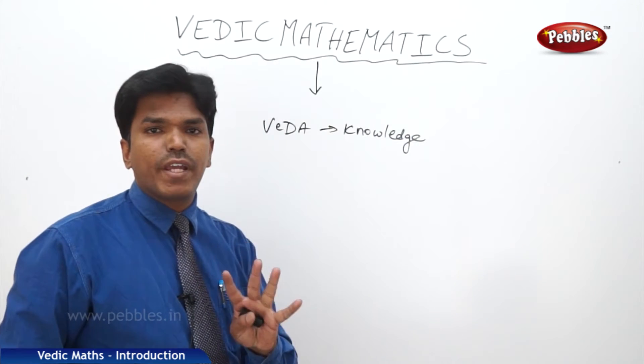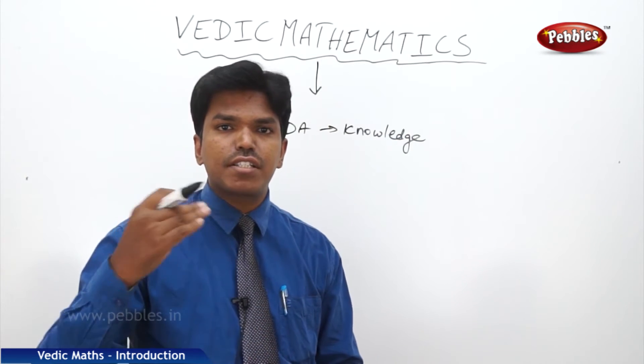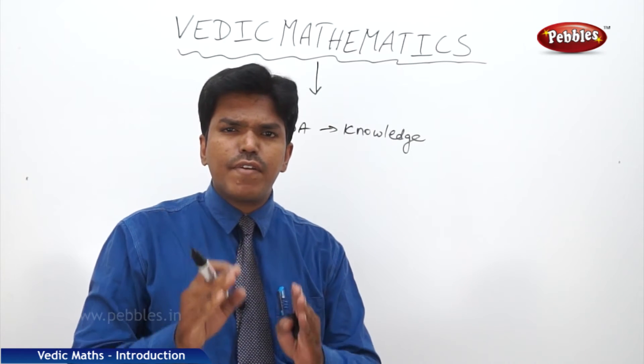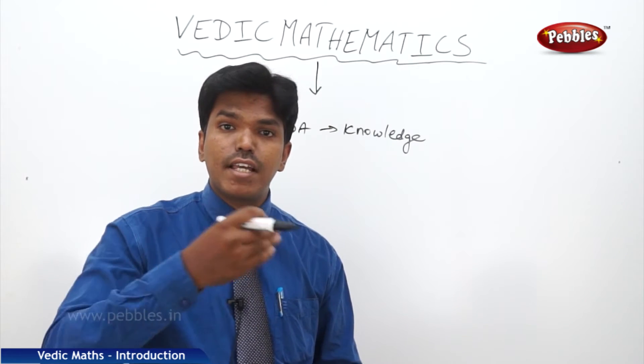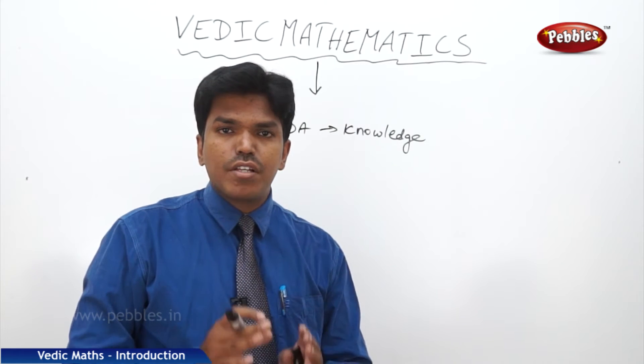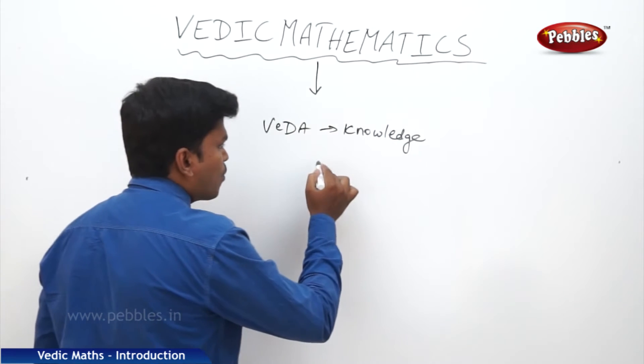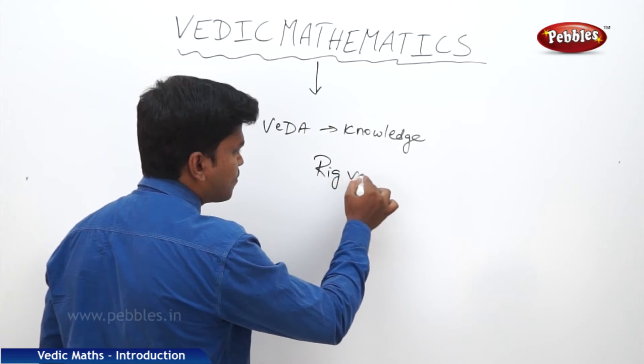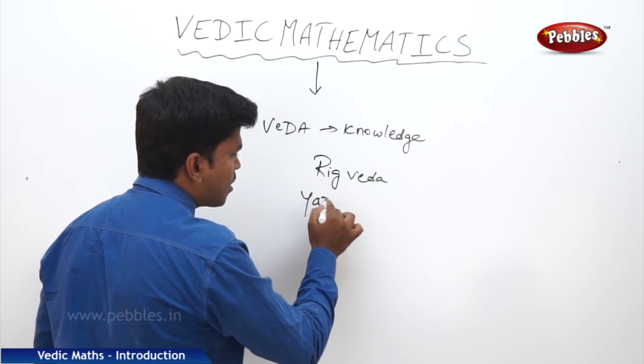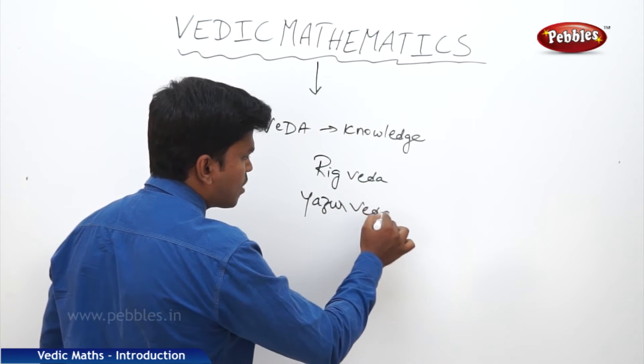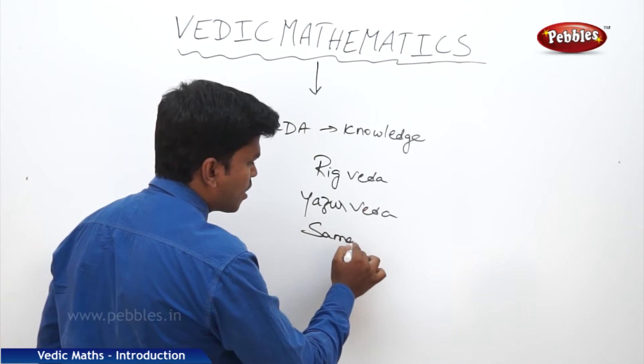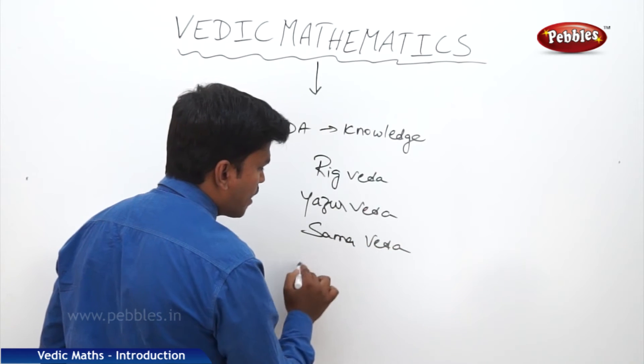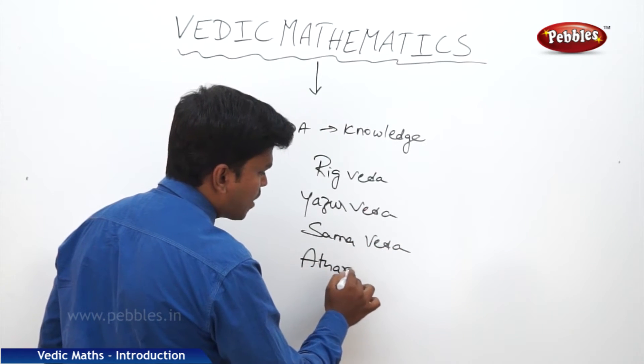We have four Vedas. These Vedas are the ancient scripts written by our forefathers. There is everything in Vedas, whatever you want that is there in the Vedas. What are the four Vedas we have? Rig Veda, Yajur Veda, Samaveda, and finally Atharvana Veda.